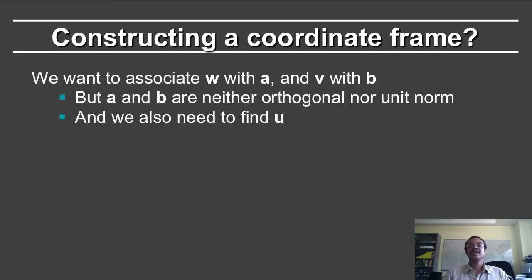Intuitively, you want to associate the vector w with a and the vector v with b. But a and b are neither orthogonal vectors nor are they unit norm. And we also need to find the u vector.